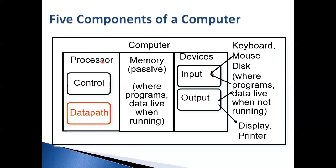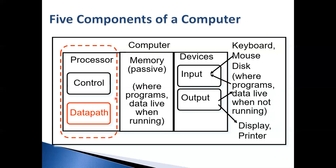The last two components come from the processor: data path and control. The CPU is the actual brain that processes what's in memory. There's a connection between the CPU and memory. The CPU manufacturers' and motherboard chipset manufacturers' job is to design hardware that makes this communication channel fast, because this is the bottleneck in modern computers. We have fast processors, but the communication between processor and memory is limited — no matter how fast your memory is, it won't be as fast as your CPU.